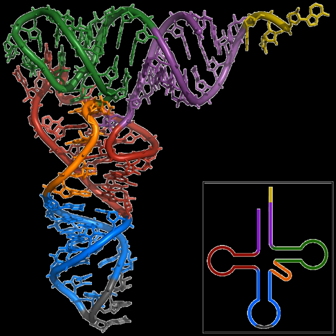In eukaryotes, translation occurs in the cytosol or across the membrane of the endoplasmic reticulum in a process called co-translational translocation. In co-translational translocation, the entire ribosome–mRNA complex binds to the outer membrane of the rough endoplasmic reticulum and the new protein is synthesized and released into the ER. The newly created polypeptide can be stored inside the ER for future vesicle transport and secretion outside the cell, or immediately secreted.